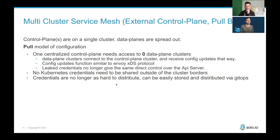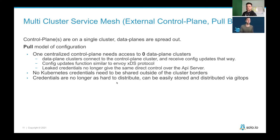The pull model of configuration means one centralized control plane which needs access to zero data plane clusters. All the data plane clusters connect to the control plane cluster and receive updates that way. The config updates function similarly to the Envoy XDS protocol. Leaked credentials no longer give the same direct control over the API server. Furthermore, no Kubernetes credentials need to be shared outside of the cluster borders. And since we are no longer distributing these credentials, the remote components we are distributing can be easily stored and distributed via GitOps.